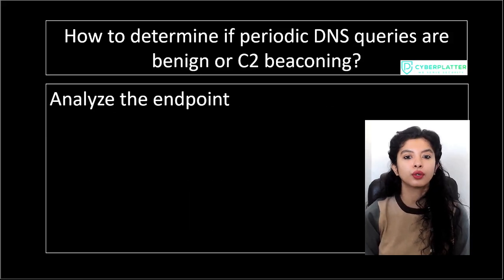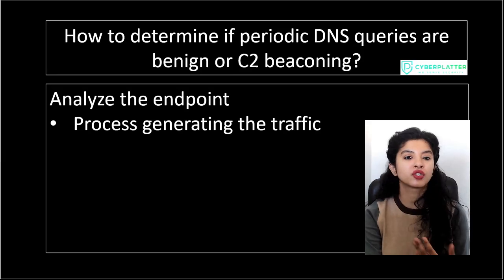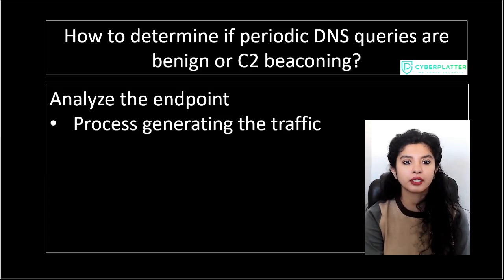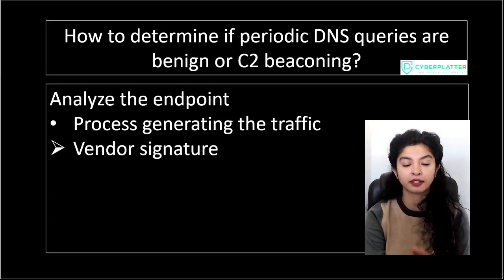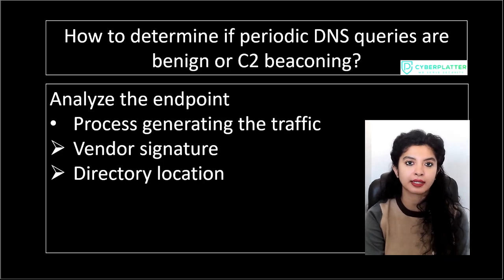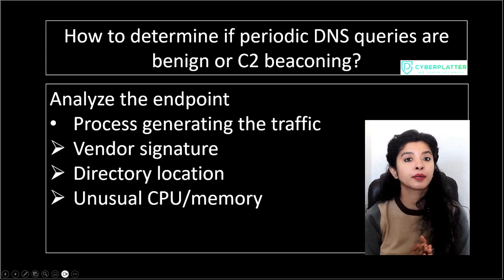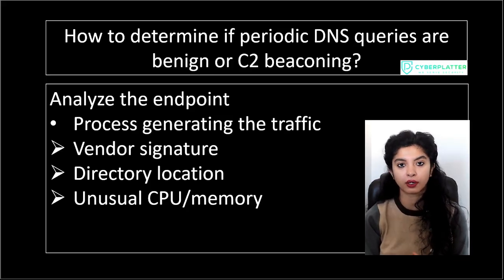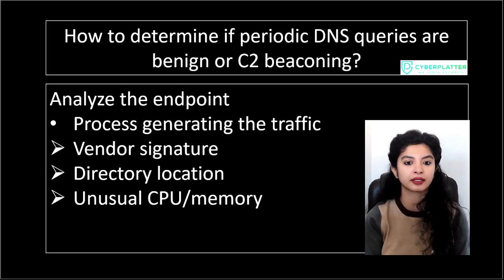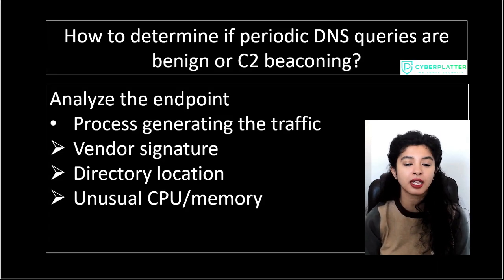Next, look closely at which processes on the machine are generating the DNS requests — that is, analyze the endpoint making the queries. Ask: what process is making the traffic? Is the executable signed by a legitimate vendor? Is it located where it should be — for example, Windows processes in System32? Is the process using unusual CPU or memory? If you find a process that is unknown, unsigned, or running from a strange directory, that is a major red flag. Legitimate software usually has proper signatures and lives in expected folders. Malware often tries to hide in temporary or obscure locations.